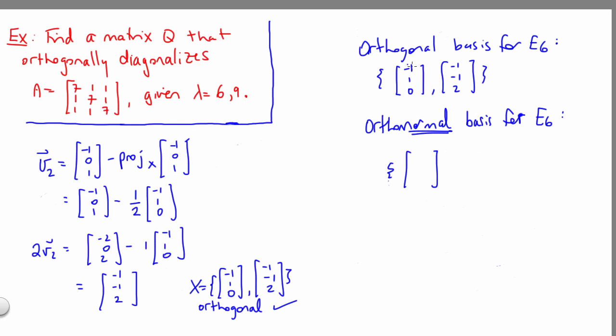So looking at the first vector, its length is root 2. So we'll just divide our components there through by root 2. Looking at the second vector, its length is root 6. So we'll divide through by root 6. So we've now got a set in which our two vectors are orthogonal to one another, and each vector has length 1.